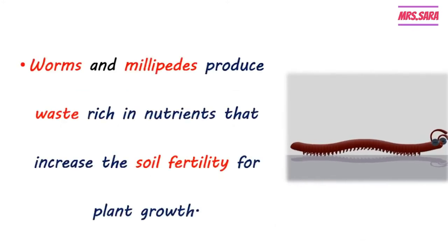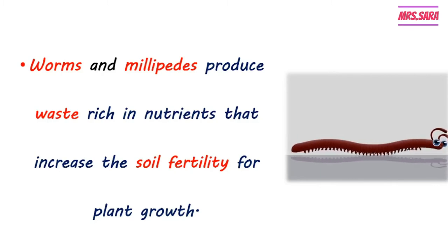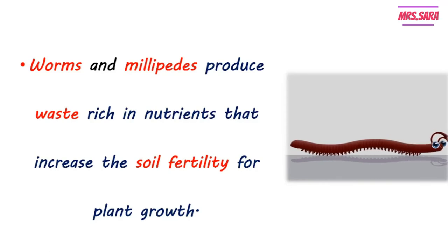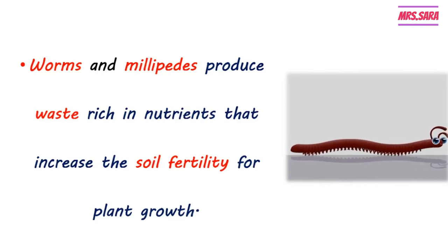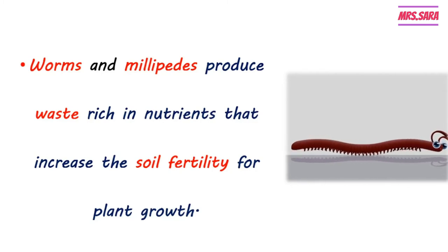Worms and millipedes produce waste rich in nutrients that increase the soil fertility for plant growth. The waste of millipedes is rich in nutrients, and soil fertility means the soil has lots of nutrients. So millipedes help increase soil fertility, which plants need in order to grow.